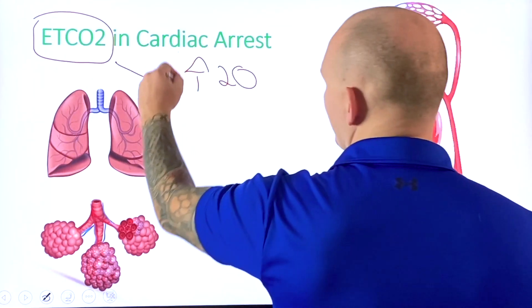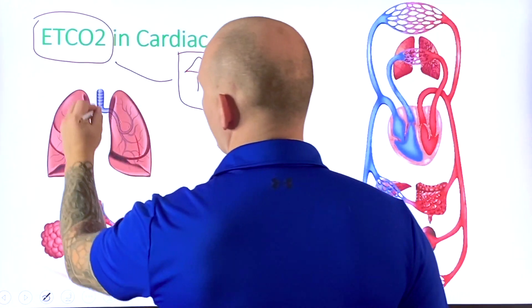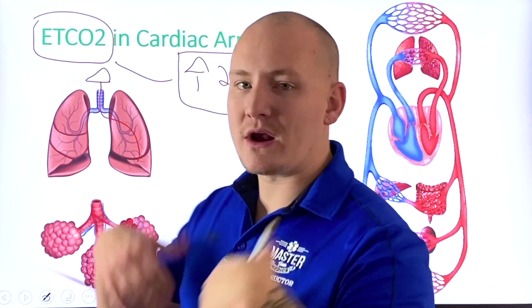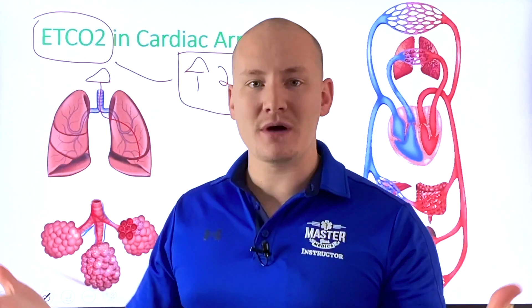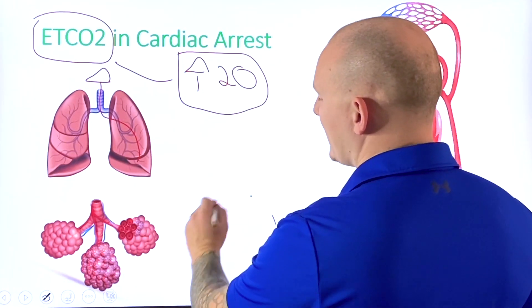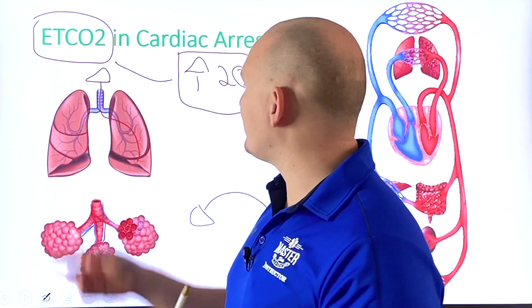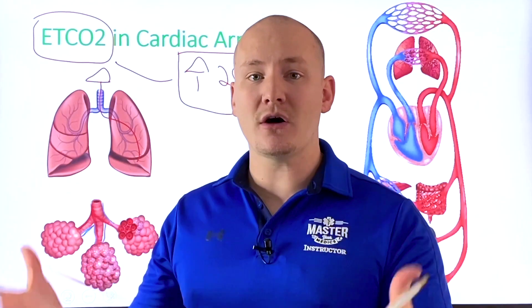Why are we looking for this number specifically? An end-tidal CO2 of 20 tells us that we're blowing off enough CO2 — 20 of our end-tidal is being respirated out as CO2. This means we have a decent amount of CO2 within the blood, and the only way we have CO2 in the blood is because our cells are putting it there during cellular respiration.